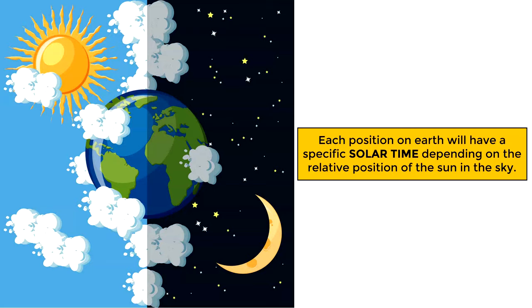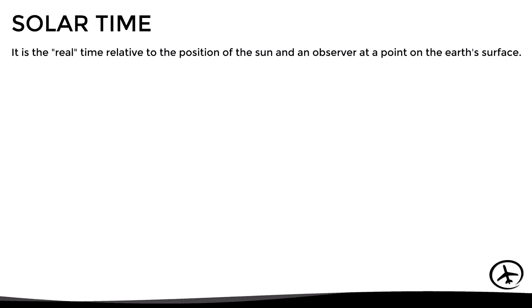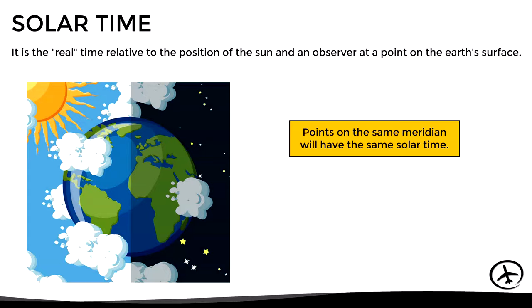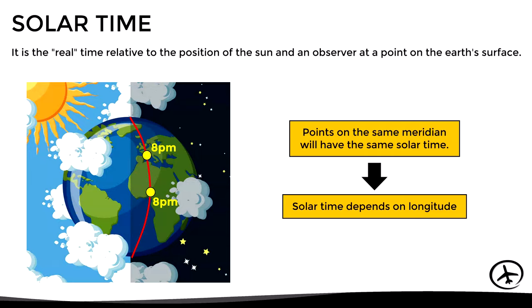Solar time is the real time relative to the position of the sun and an observer at a point on the Earth's surface. One important thing to bear in mind is that points on the same meridian will have the same solar time. In other words, solar time depends on longitude.